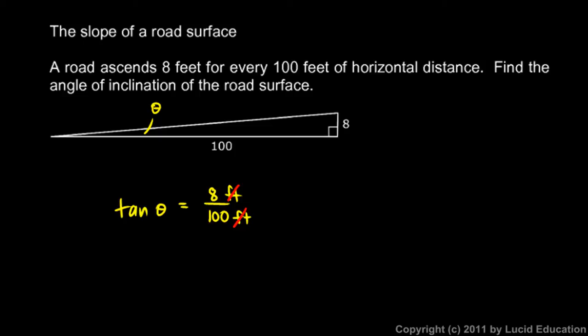So then we can find theta. If the tangent of theta is this, then theta is the inverse tangent of that. So it's the inverse tangent of 8 over 100. And I would type it exactly into the calculator like that. You could compute 8 over 100 and get a decimal value, and then do the inverse tangent of that. But you can do it in one step on the calculator like that pretty easily. And this comes out to 4.57 degrees.